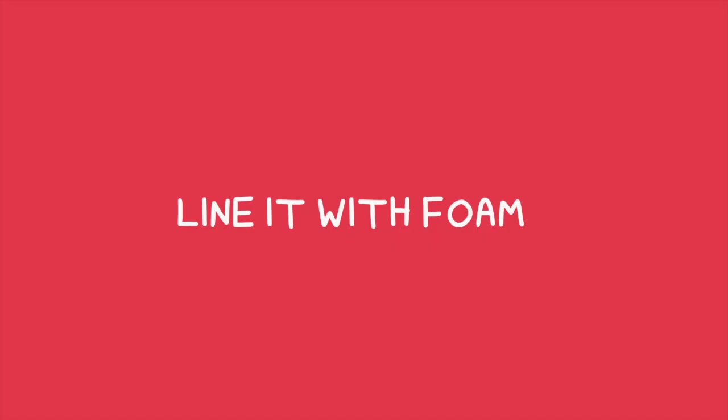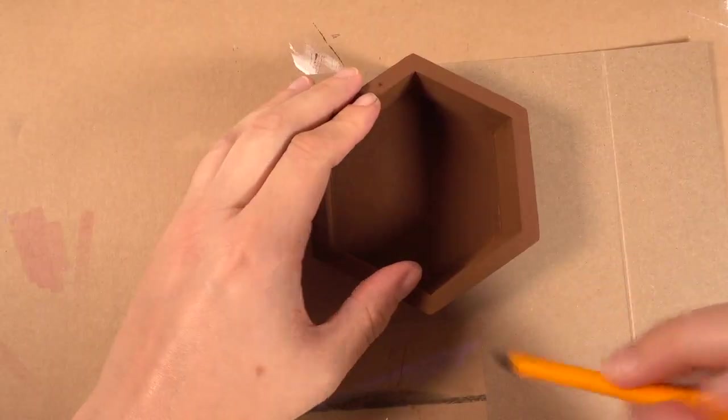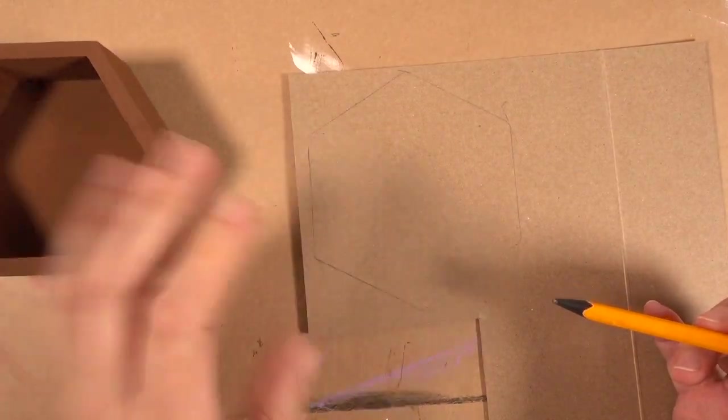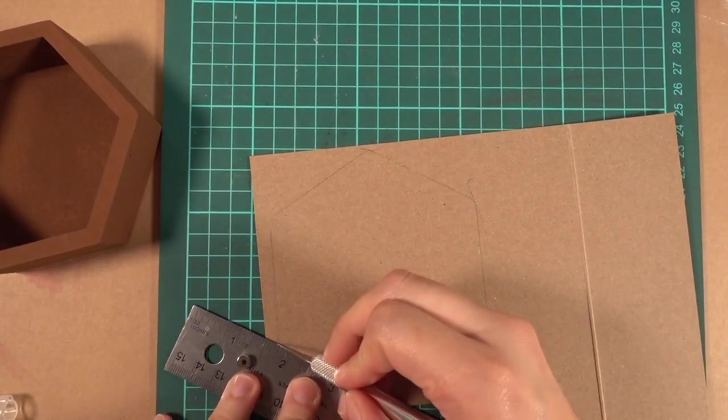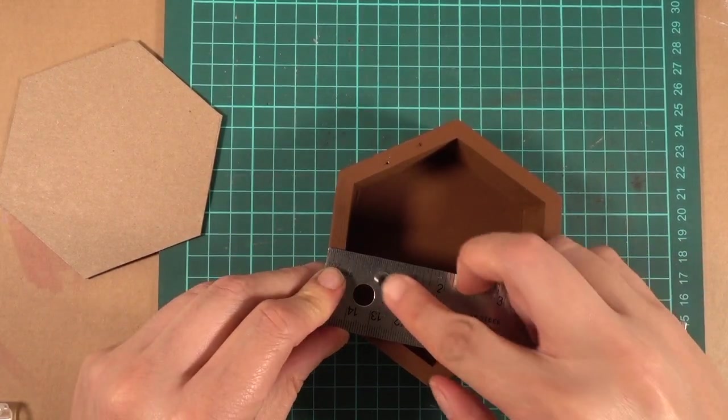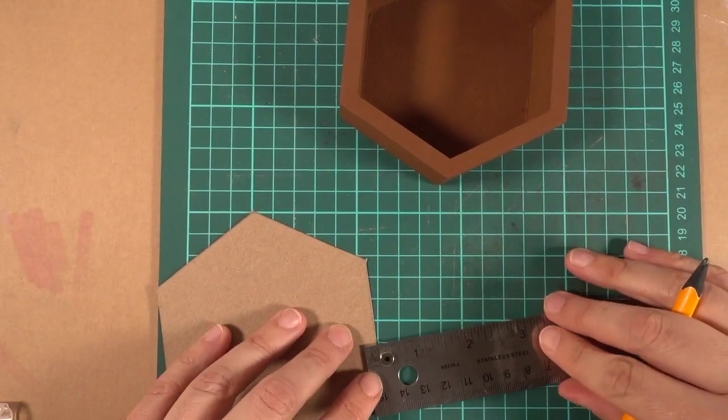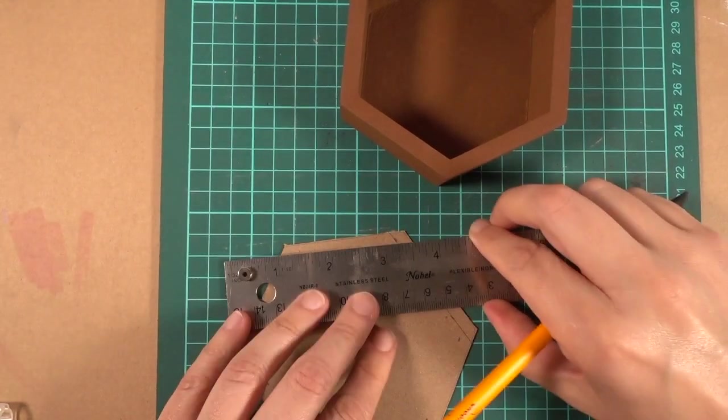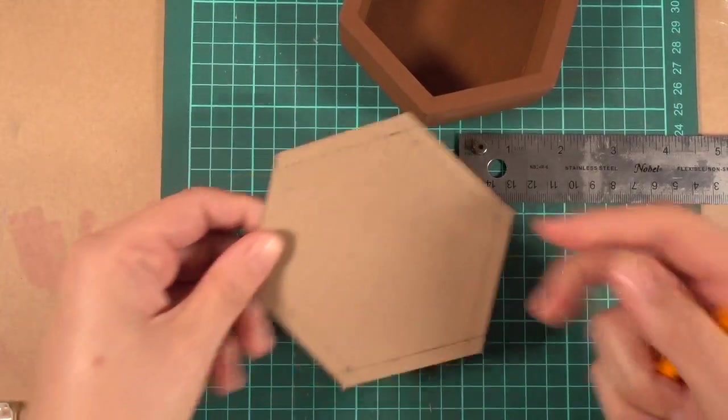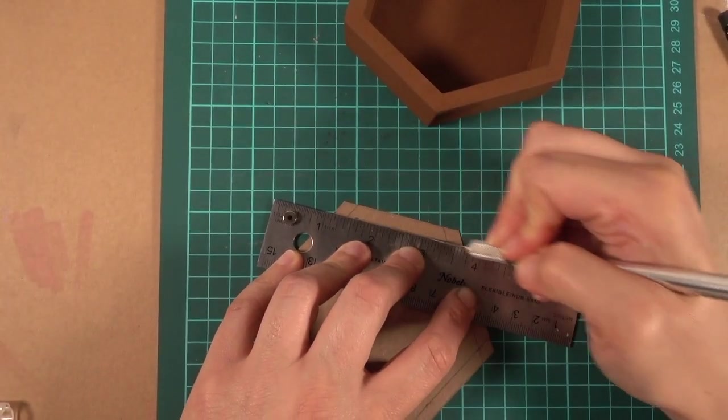So I think that looks pretty good, now we can line the inside with the foam. So get your cardboard piece and trace the outside of the box onto it, then cut out that shape. Now you want to measure the width of the walls of the box. I think this one was about a quarter of an inch or so, so measure that all the way around the cardboard shape you cut out. You'll have a slightly smaller version of that shape now. Cut off that outside rim and you'll be left with a piece of cardboard roughly the same size as the inside of the box.